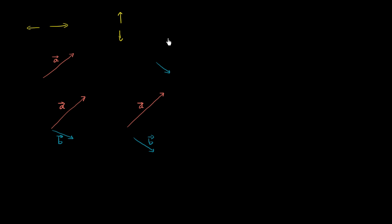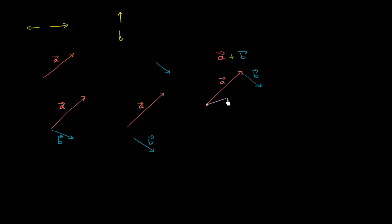If I wanted to add vector a plus vector b — and I'll show you how to do it more analytically in a future video — I can literally draw vector a, and then I draw vector b, but I put the tail of vector b to the head of vector a. So I shift vector b over so its tail is right at the head of vector a, and then vector b would look something like this. If you go from the tail of a all the way to the head of b, and you call that vector c, that is the sum of a and b.